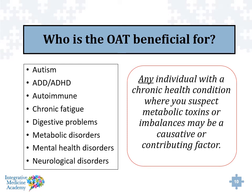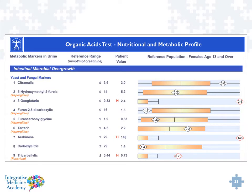The organic acid test is extremely beneficial for a wide variety of individuals. Really, any individual who has some type of chronic health condition can get benefit from this test. It takes some time to learn how to interpret it, but it's not impossible, and it'll transform your practice in being able to help many more people with chronic health challenges. The organic acid test is broken into sections. We've got the yeast and fungal markers under the intestinal microbial overgrowth section on page one. This looks at markers linked to Aspergillus mold, Candida, other yeast, and even Fusarium mold.